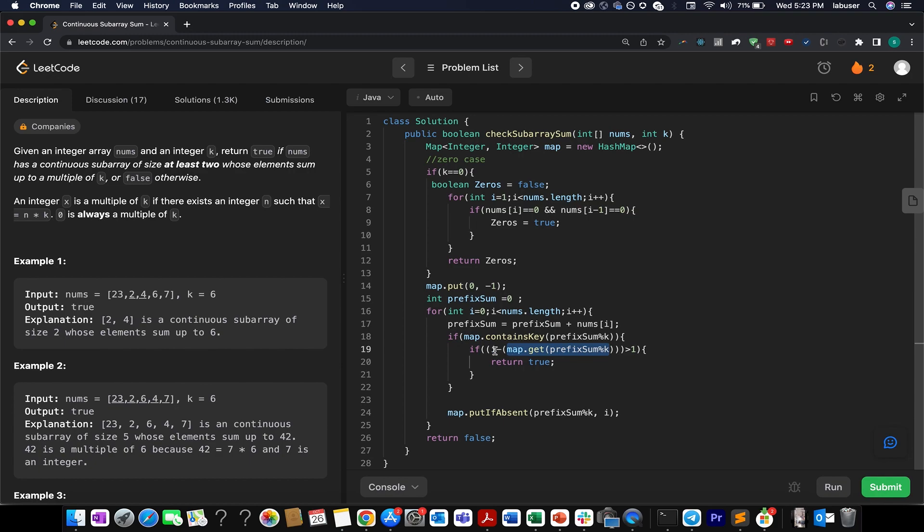If the current index minus the index at which the same prefix sum occurs is greater than one, then what does it mean? It means that I have identified a happy case. I need to return true in those cases.